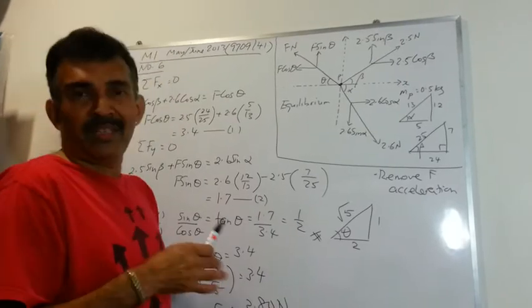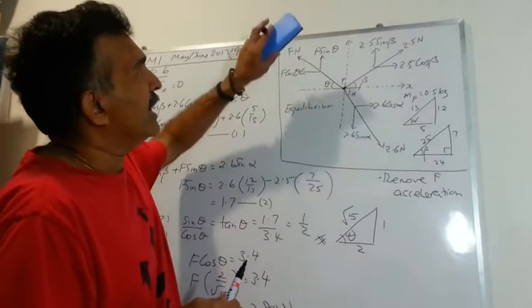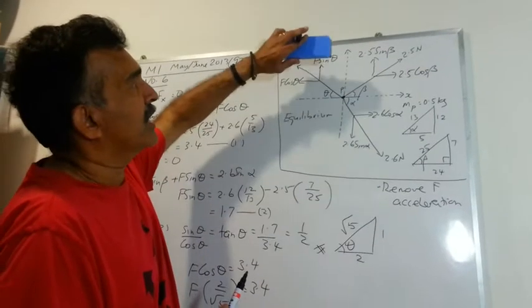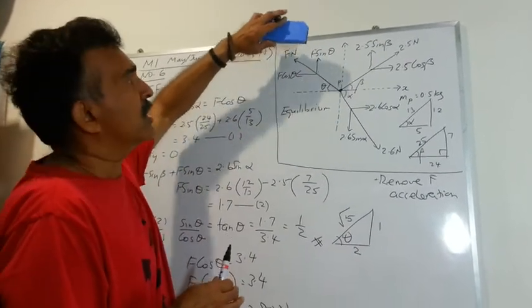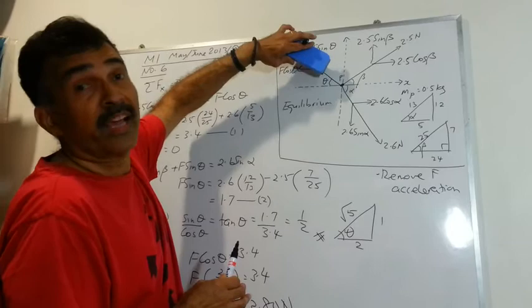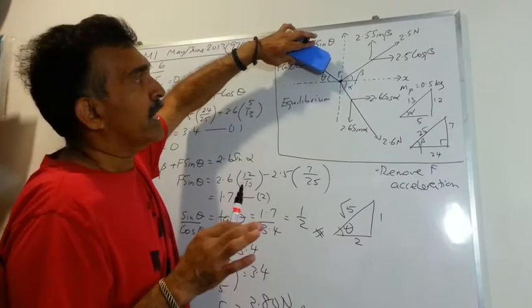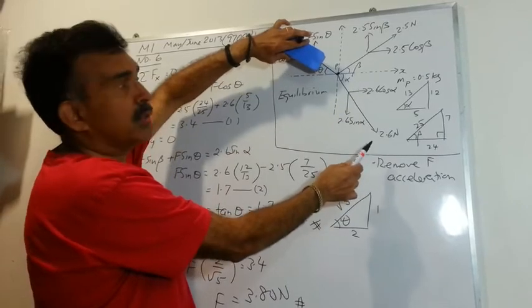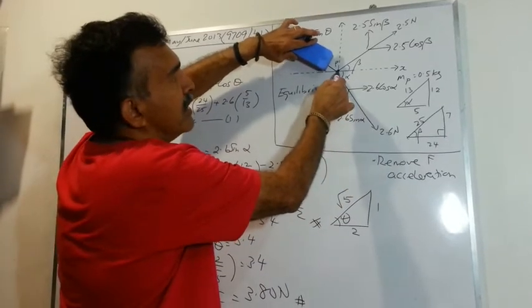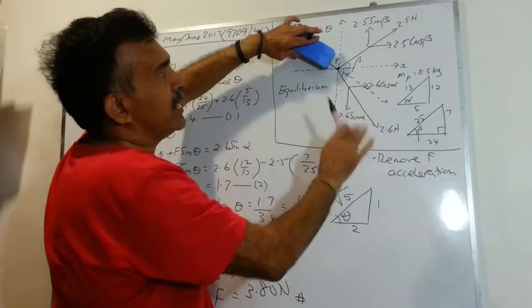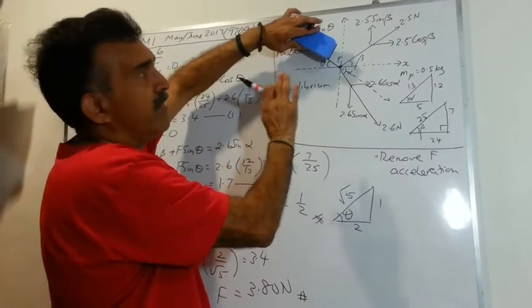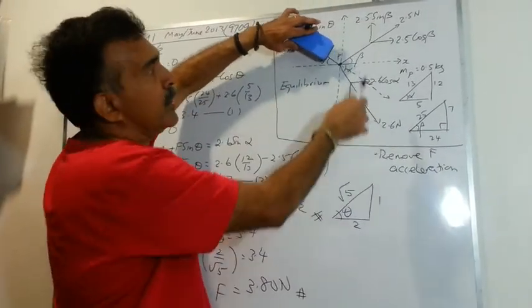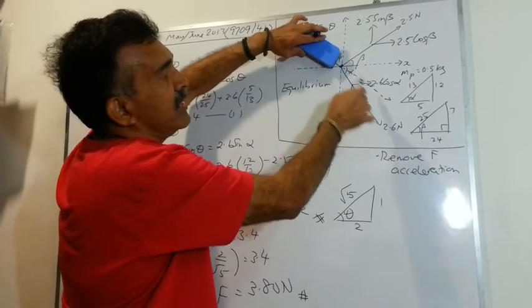So first let's understand the physics. Let's look at the system of forces, the initial system that is given to us without this force F. So if you only have a two force system, that is a 2.5 newton and a 2.6 newton, you are going to get a resultant somewhere along here. I repeat, if you ignore this force F, if you only have a two force system, you are going to have a resultant in this direction.